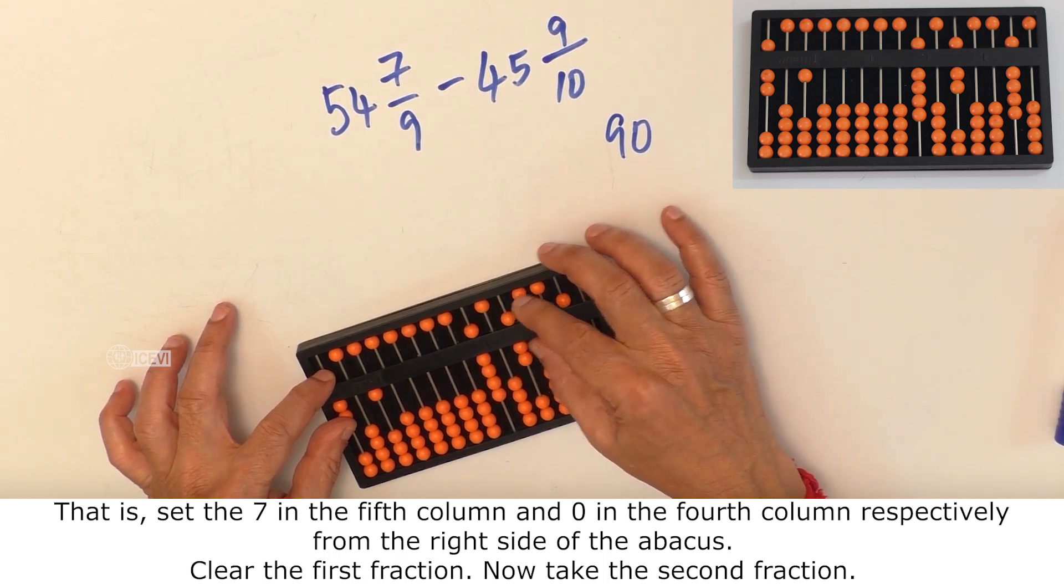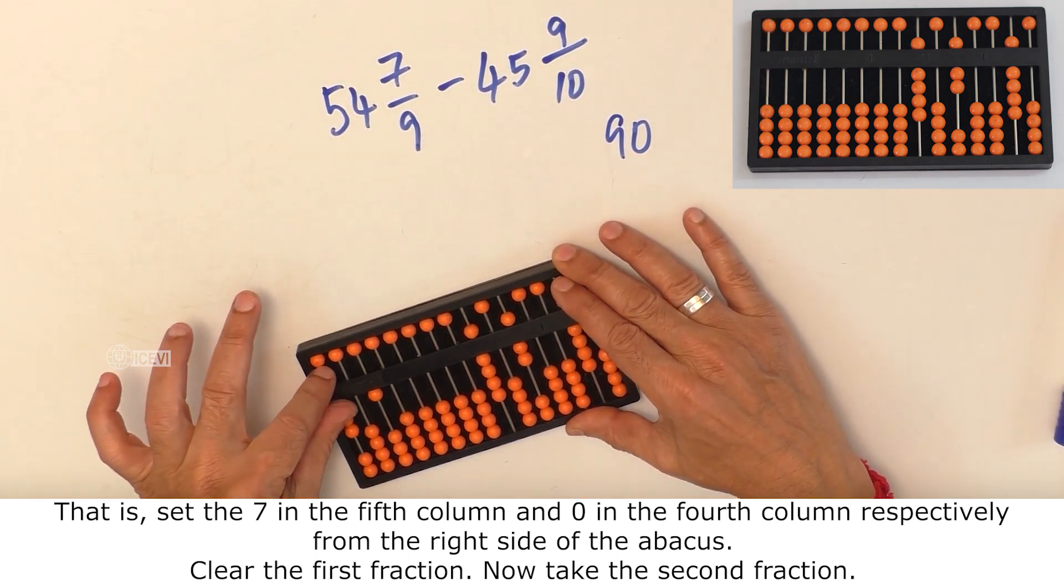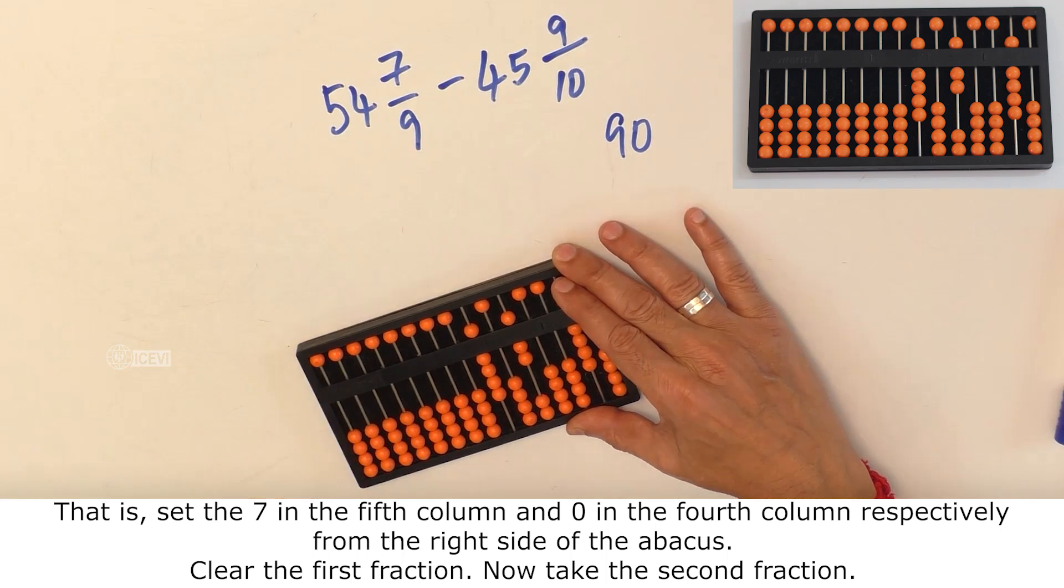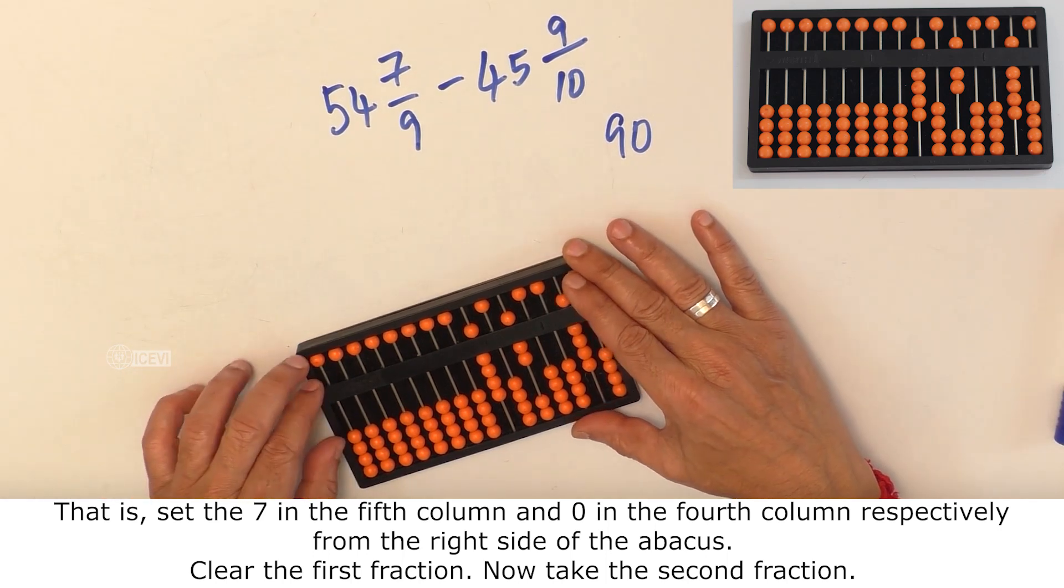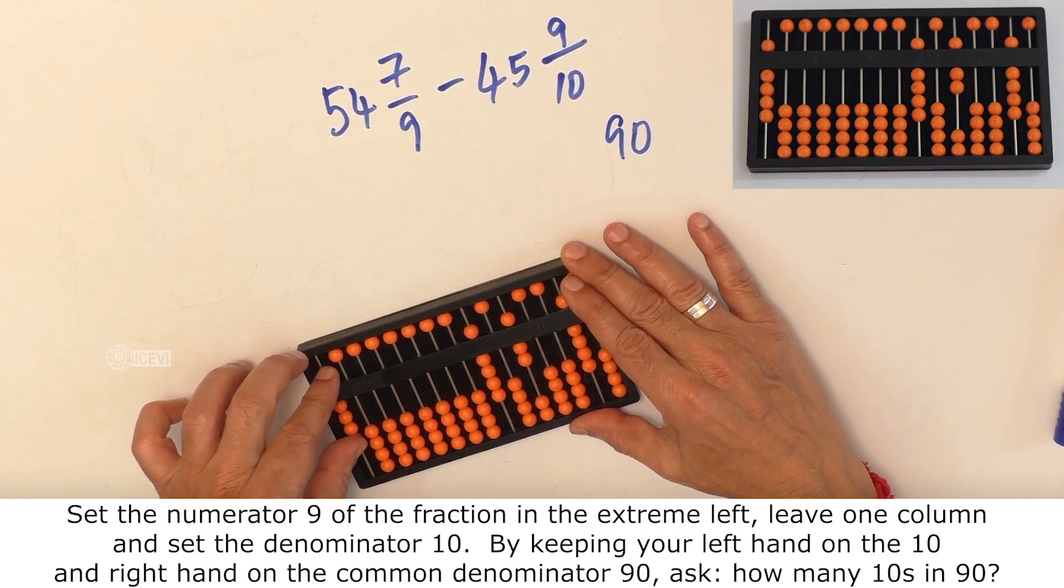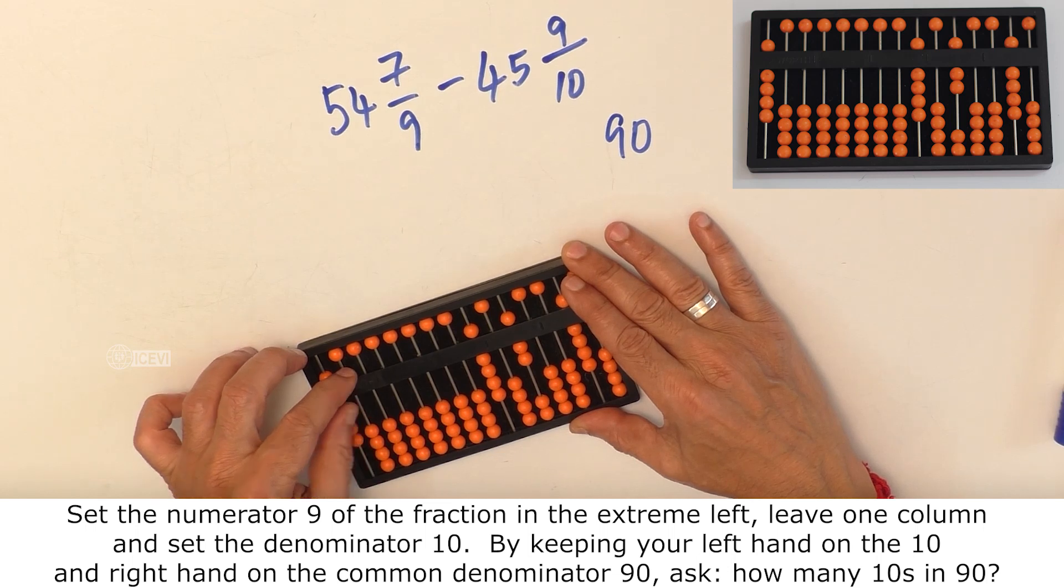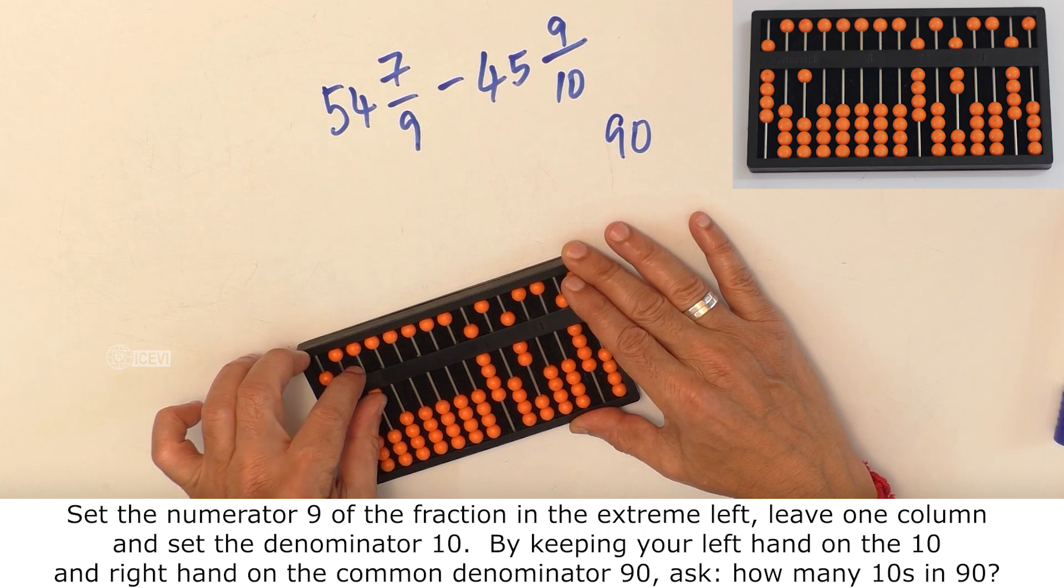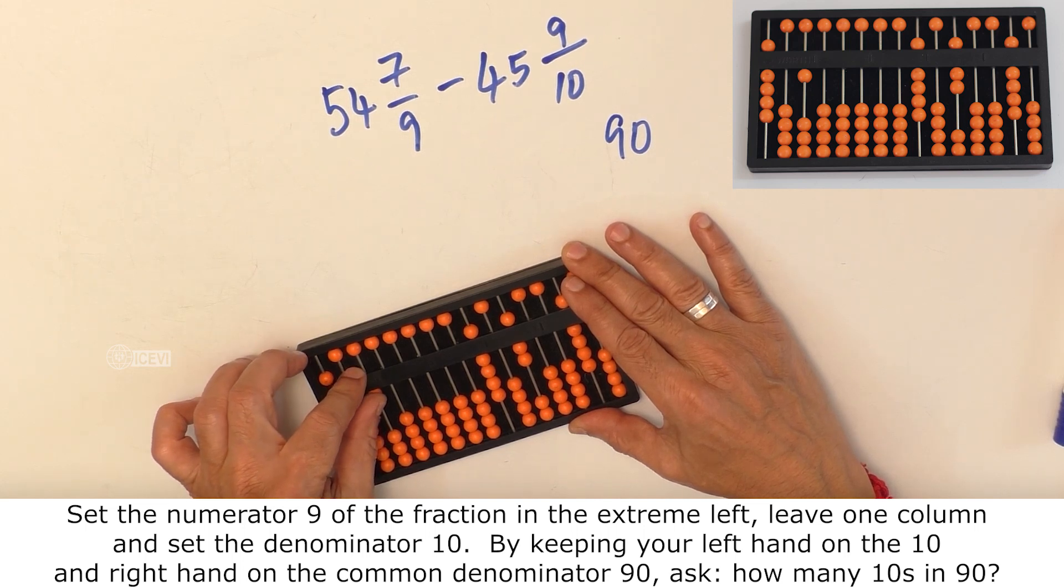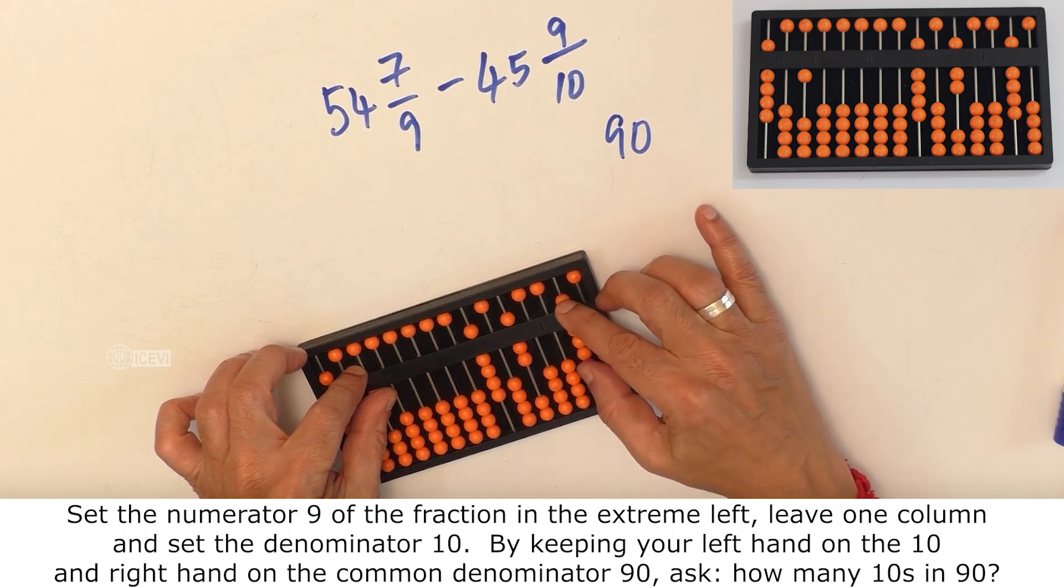Now clear the first fraction. Now take the second fraction. Set the numerator 9 of the fraction in the extreme left. Leave 1 column and set the denominator 10. By keeping your left hand on the 10 and right hand on the common denominator 90, ask how many 10's in 90.